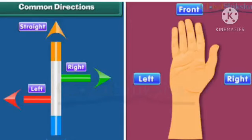So our right side is the South direction and our left side is the North direction. Like this, we can find out North and South directions.